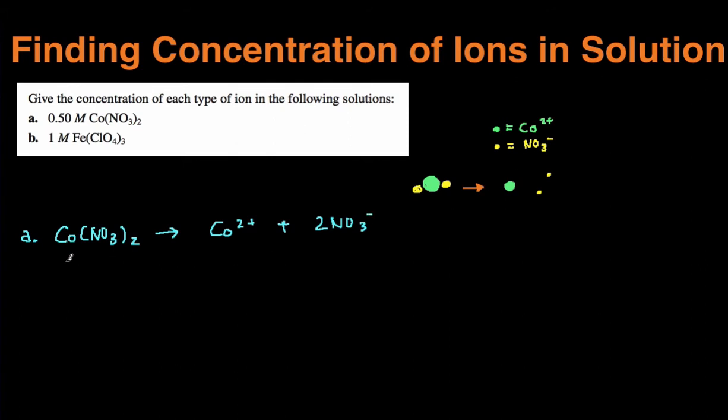Then you can do this multiple ways. One way is using stoichiometry. So we have 0.5 molar of the cobalt nitrate, and you can see this is a 1 to 1 ratio. So then this means you'll also get 0.5 molar cobalt ion.